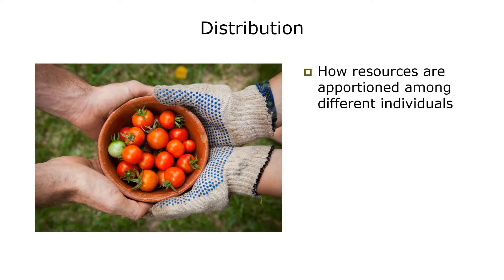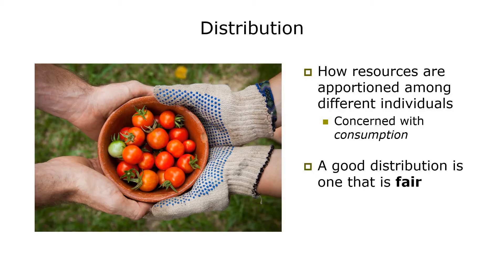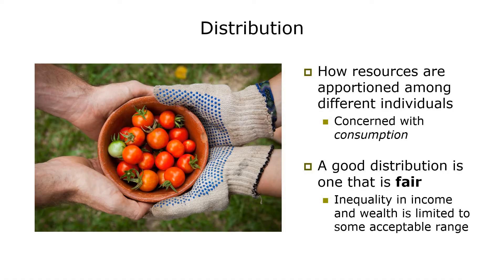Distribution refers to how resources are apportioned among different individuals — in other words, who gets the stuff that is produced. Whereas allocation is concerned with production, distribution is concerned with consumption. We generally think about distribution in terms of income and wealth, and we usually measure it by looking at how equally or unequally income and wealth are distributed. A good distribution is one that is fair — where the degree of inequality in income and wealth is limited to some acceptable range. Distribution is very much a normative issue, as we have to decide as a society what constitutes an acceptable range, so the concept of justice is very important here.